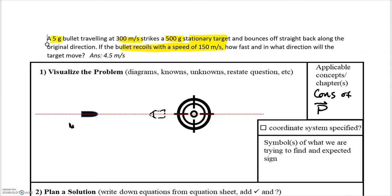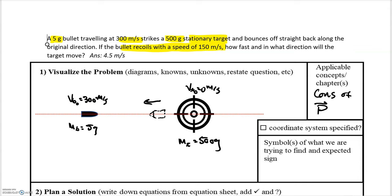You may have seen in movies that if a bullet bounces off a free target, the target spins or moves away. Based on that physical intuition, we expect the target to be moving to the right in this situation. So: m_b = 5 g, m_t = 500 g, v_t0 = 0 m/s, v_b0 = 300 m/s, v_bf = negative 150 m/s since it rebounds to the left. We expect the final velocity of the target to be positive, moving to the right.